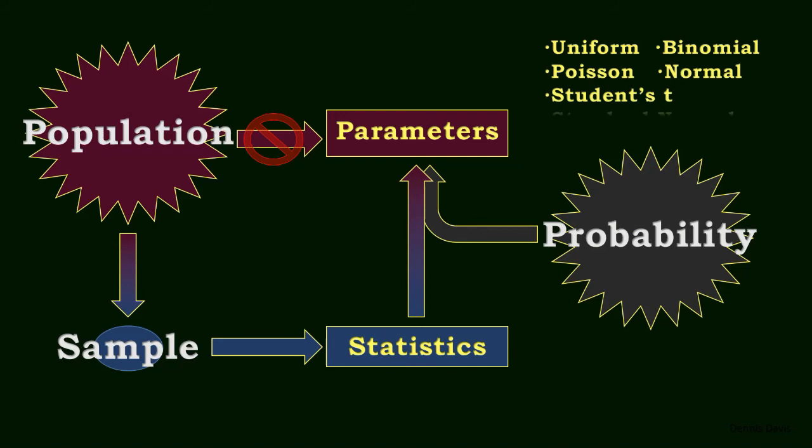And, of course, probability studies include common probability distributions, including the uniform, binomial, Poisson, normal, or bell-shaped curve, the student's t, and the standard normal, which is a normal-shaped curve with a mean of zero and a standard deviation of one, and is used often with z-scores that we mentioned earlier.